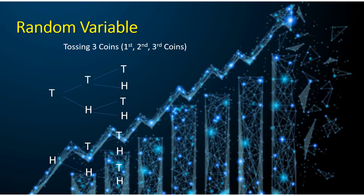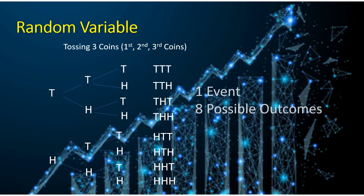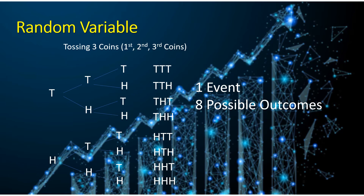And so on, we will be having these possible outcomes. All in all, we will be having 8 possible outcomes. These are: tail-tail-tail, tail-tail-head, tail-head-tail, tail-head-head, head-tail-tail, head-tail-head, head-head-tail, and head-head-head. So by tossing these 3 coins at the same time, for just one event, there are 8 possible outcomes.